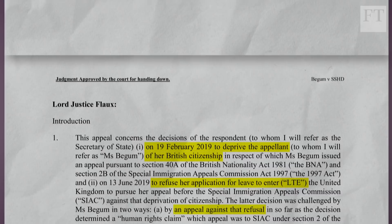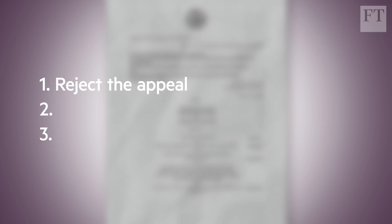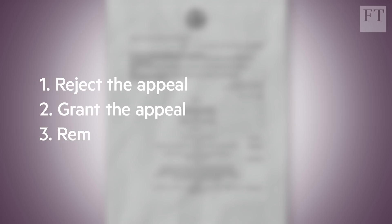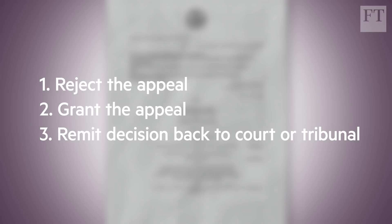The Court of Appeal does not decide issues which are for courts and tribunals of first instance — it is an appeal court. An appeal court can broadly do one of three things: it can reject the appeal and allow the decision below to stand; it can grant the appeal reversing the decision below; or it can decide that the court or tribunal below has to retake the decision, sending it back down with guidance from the Court of Appeal. So the Court of Appeal must decide whether to uphold SIAC's decisions, allow the appeal against them, or send it back to SIAC to decide again.